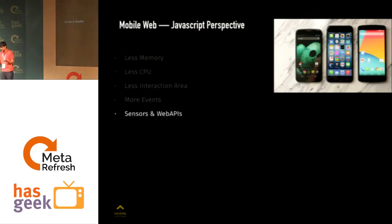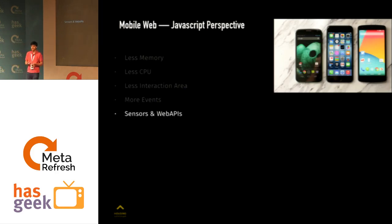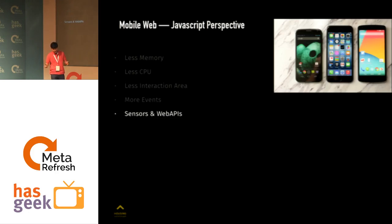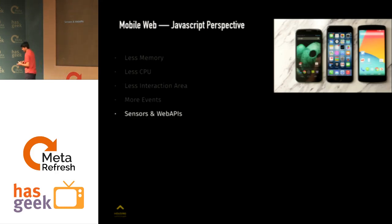There are sensors, web APIs, more events — like touch events and web sensors. Web APIs are there for navigation sensors and everything. All these things clubbing together on the mobile web is a good thing, but there are consequences. India is a growing country — everyone dreams of buying an iPhone, but not everyone has one.